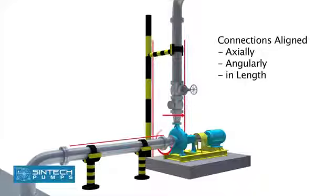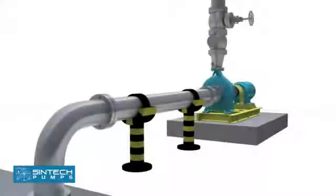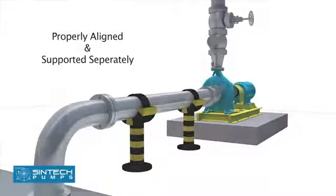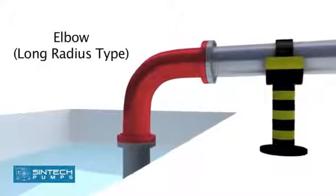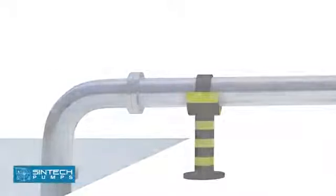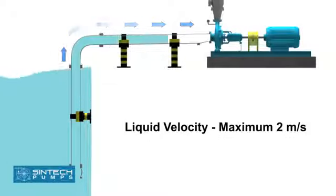Suction piping in case of suction lift condition (negative suction): The piping, gum, and connection fittings should be properly aligned and supported separately. The elbow should be of long radius type. All suction piping must be airtight. The suction pipe should be sized to ensure liquid velocity of not more than 2 meters per second.